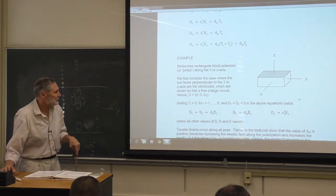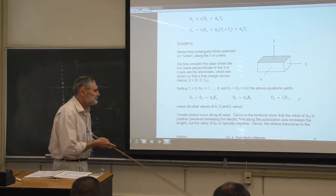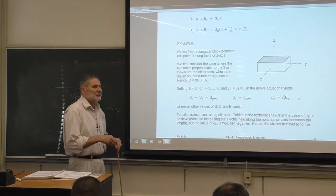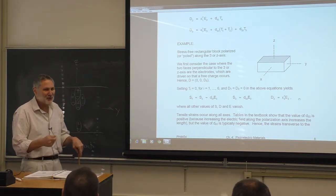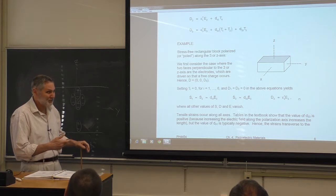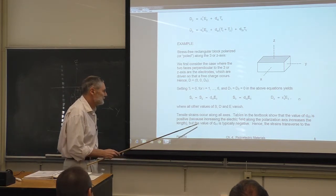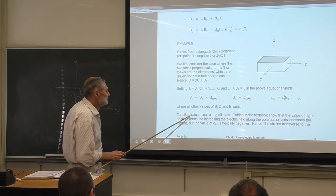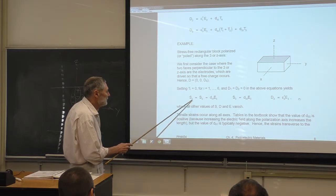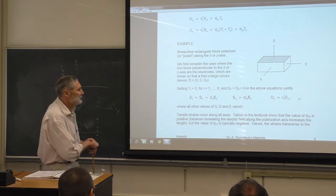Here's the relationship between D₃ and E₃, and all the other values are zero. We're going to revisit this effective Poisson's ratio due to an electric field rather than a mechanical strain.